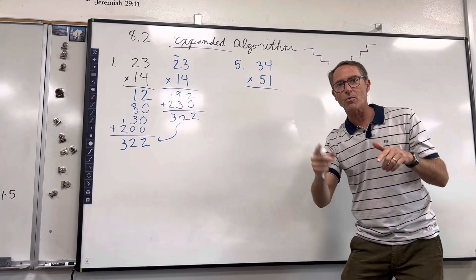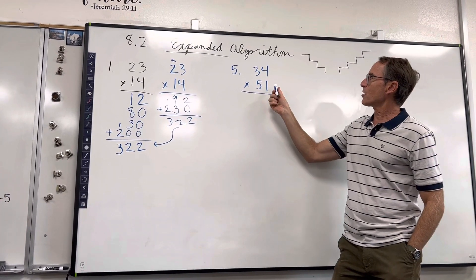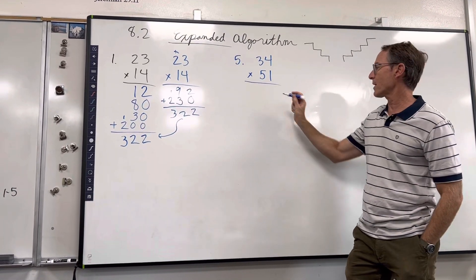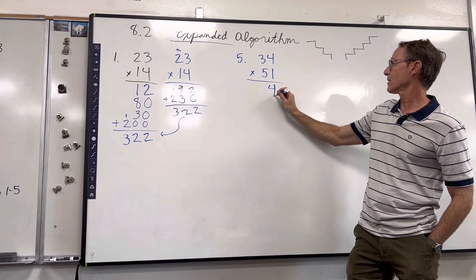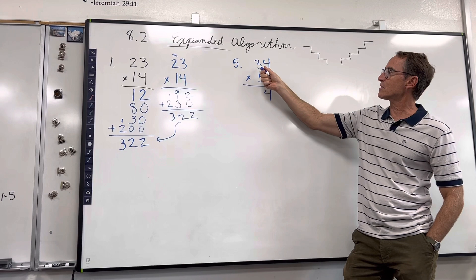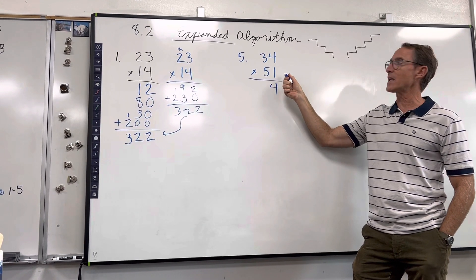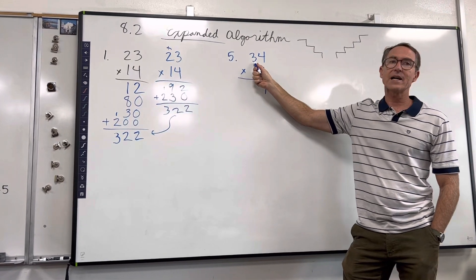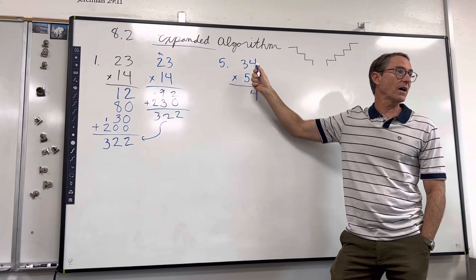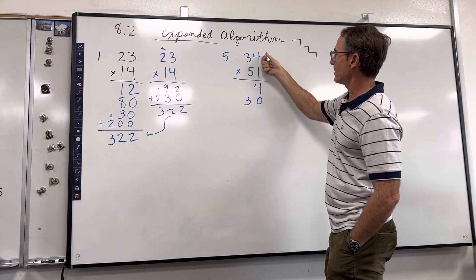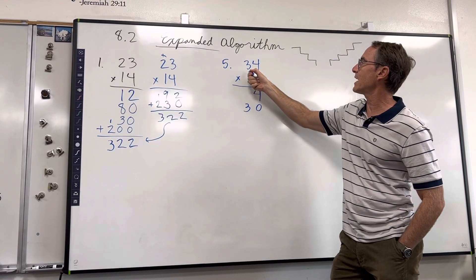This is going to be kind of confusing to a lot of students, so I want to go over this again. Here's our problem: we've got 1 times 4, which is what everybody? Four. Write that down. So we did our ones. Our next step is—we used to say 1 times 3 in standard—but this is actually 1 times 30, which is what? 30. Write that down.